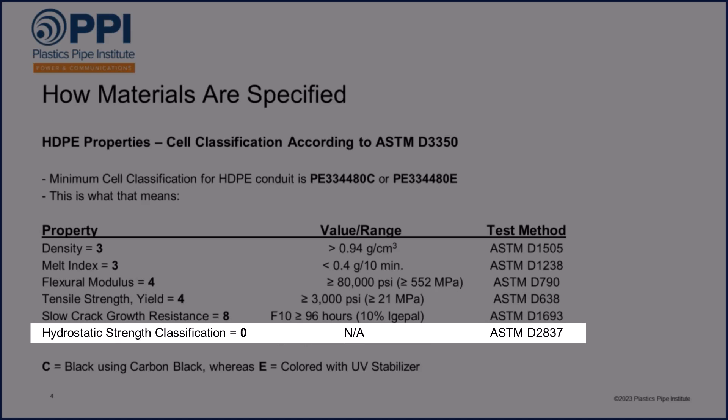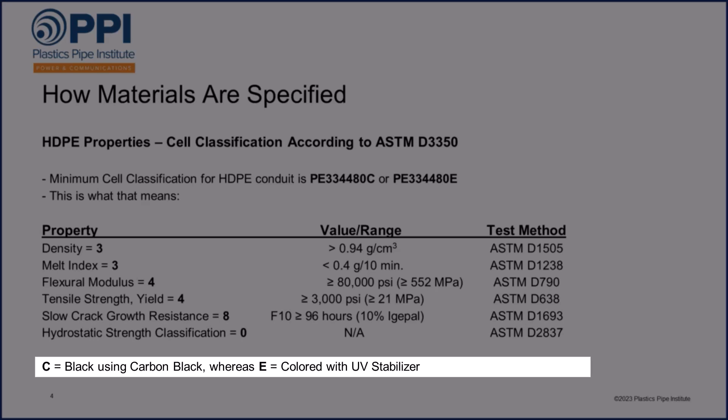Conduit uses a zero for the sixth digit, as this is exclusively for the use of pressure pipe materials. Finally, the letters C or E are added at the end and refer to how UV resistance is achieved. C refers to the use of carbon black in a black product, or E refers to products which are colored with UV stabilizers built into the compound.